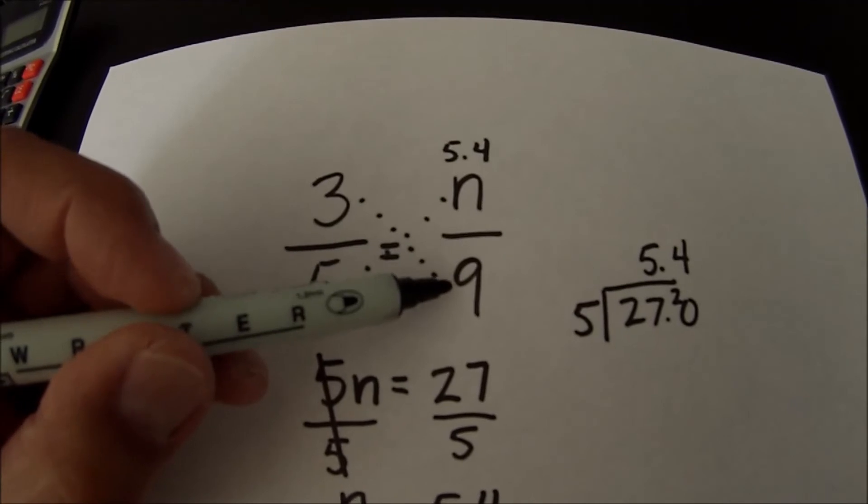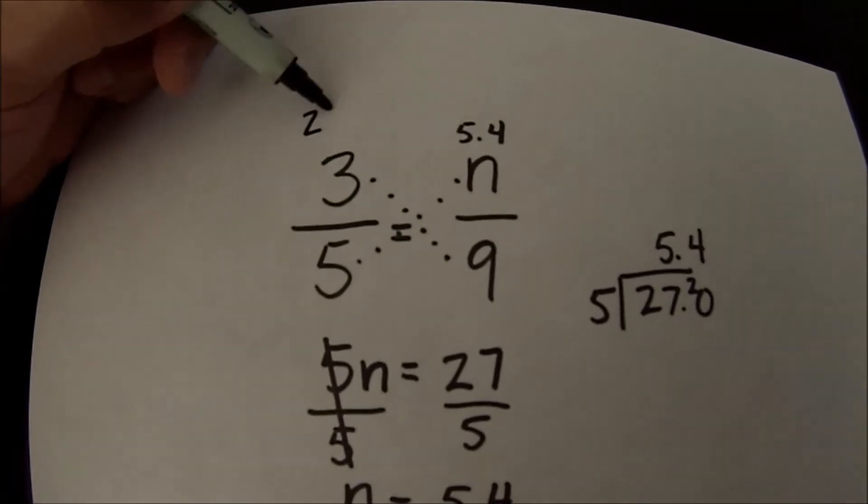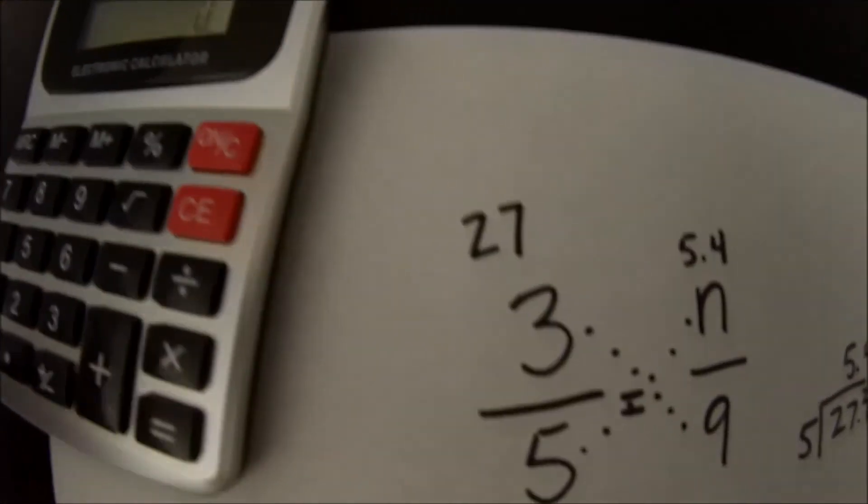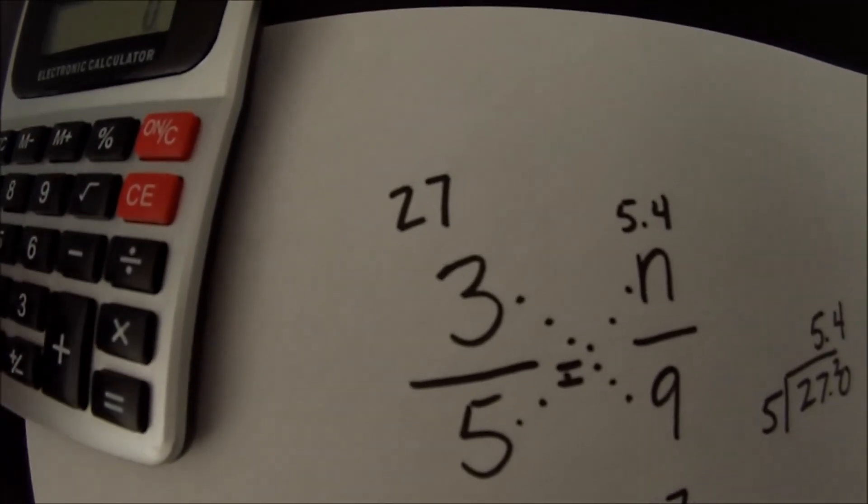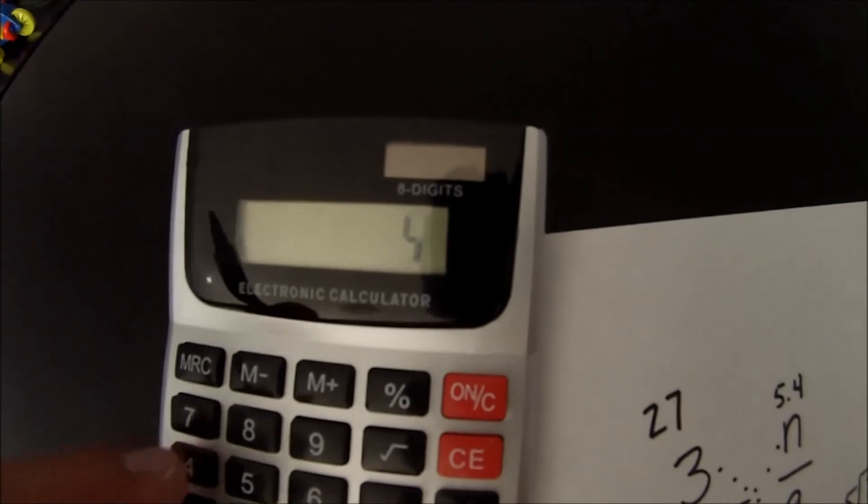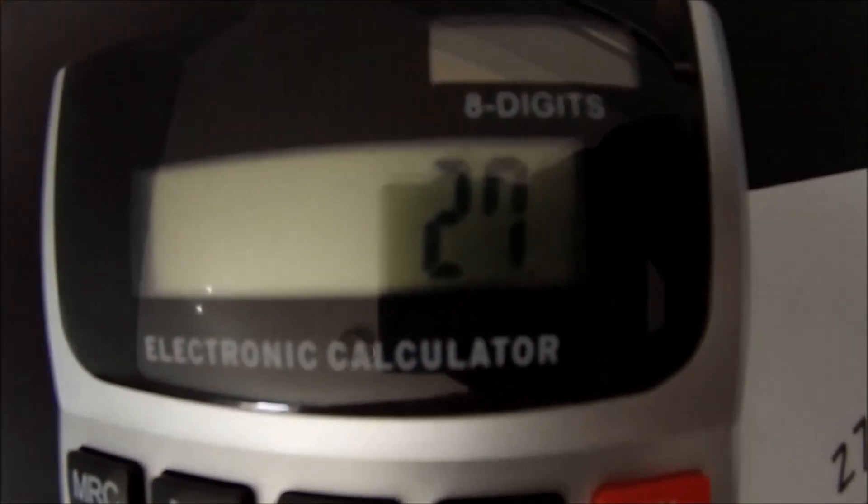So we already cross multiplied here so 9 times 3 is 27 and all I have to do now is make sure that 5 times 5.4 is 27. If it is then 5.4 is correct. So 5.4 times 5 and get 27.